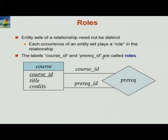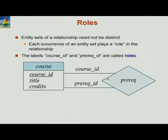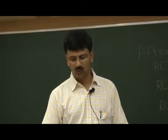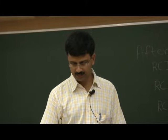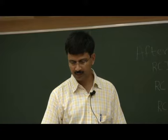The notion of roles is used, for example, for prerequisite relationships. The prereq relationship relates course with course, so you have to identify which is the course and which is the prerequisite. We add labels on these edges which are called roles. That brings us to the end of part one. In part two we will look at other ER notation, but before that let's do some exercises and try some ER modeling on the fly.